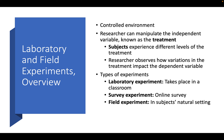There are three types of experiments. The lab experiment takes place in a classroom. The survey experiment takes place online. And the field experiment takes place in the subject's natural setting. Each of these have advantages and disadvantages that we will explore in these podcasts.